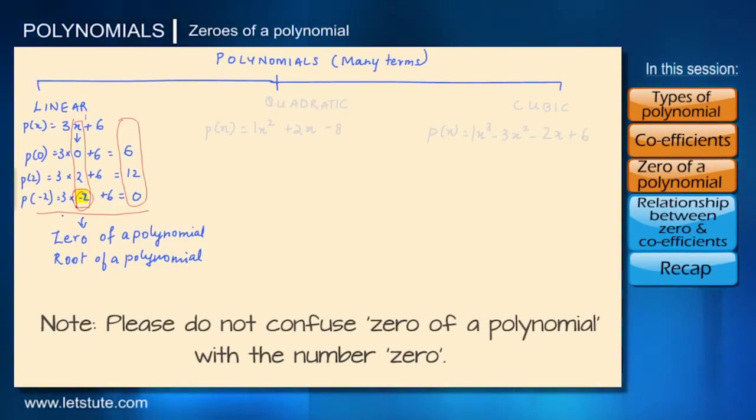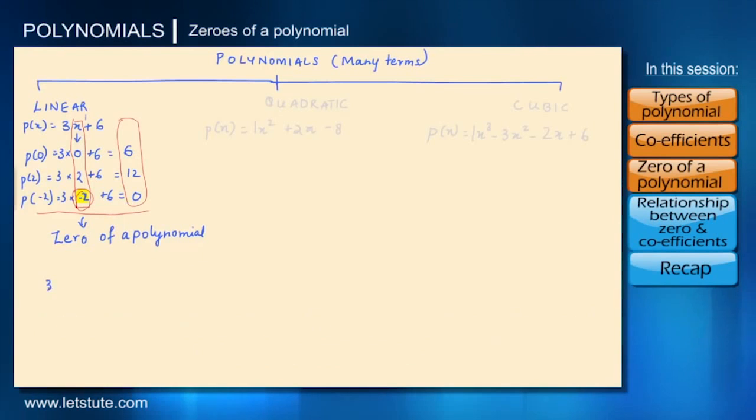So now we know that when we put the polynomial equal to 0, let's say I take 3x plus 6 equal to 0. If I do this, I should be able to get this value of x as minus 2. Right? It's just the reverse process. So let's check.